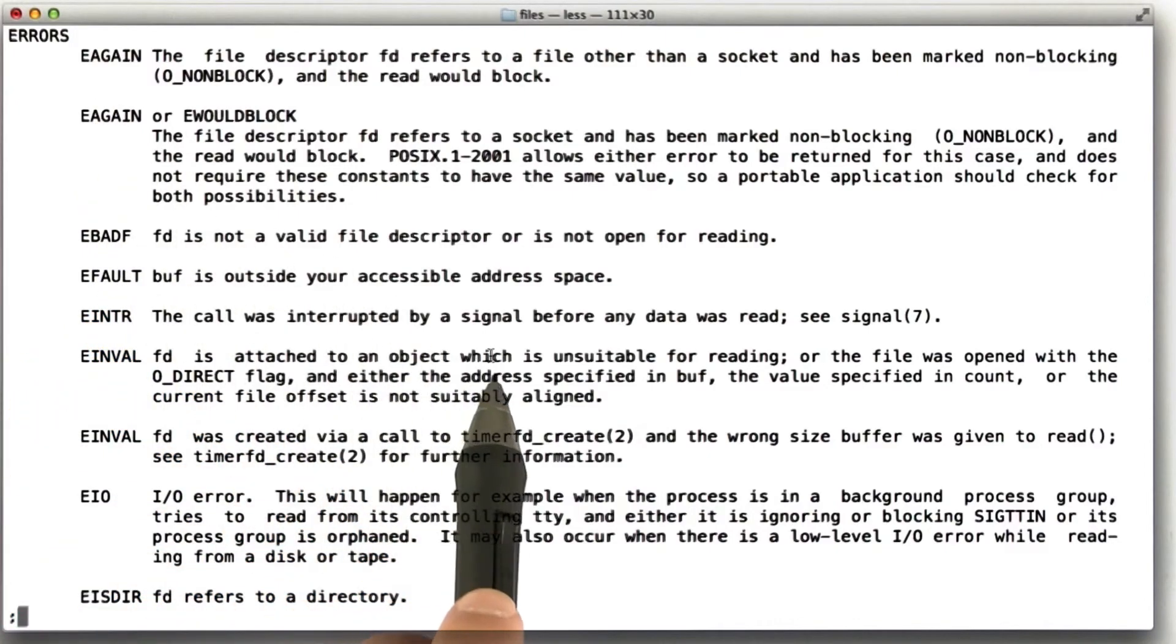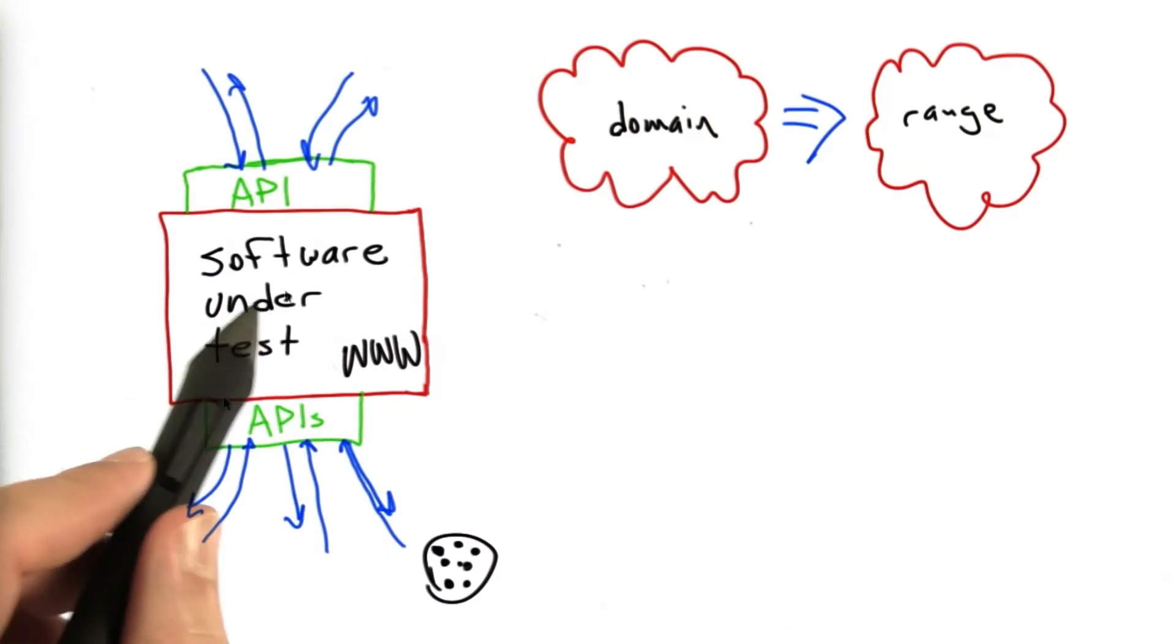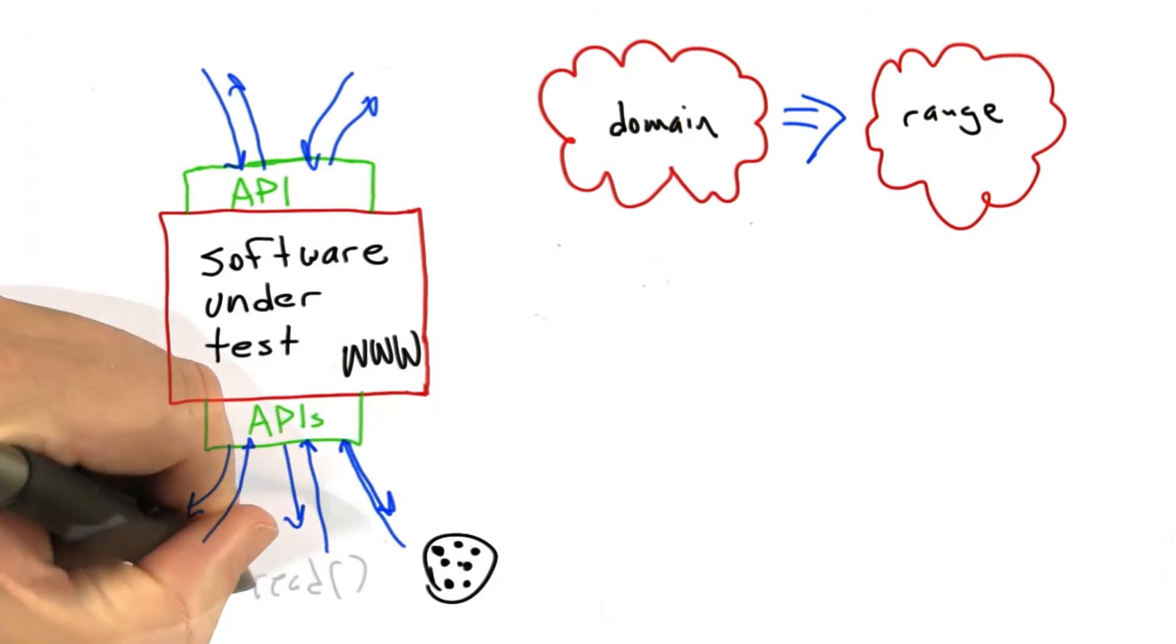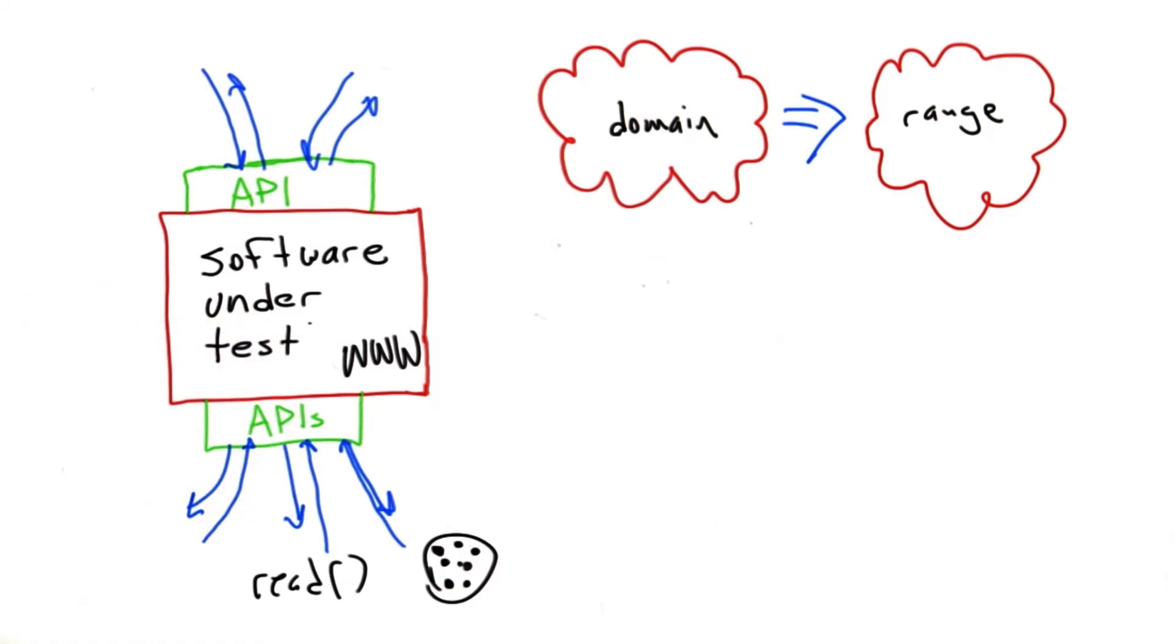And the point is, it might be very hard as people testing the web browser to actually make the operating system read call return all of those different values. And until we've tested it with all those different values, we're left with software whose behavior we probably don't understand, and therefore it's software that hasn't been tested very well.